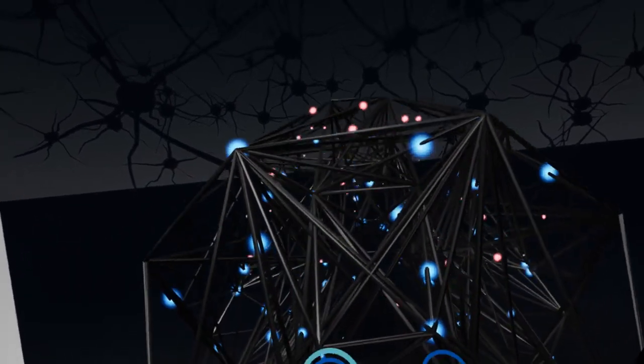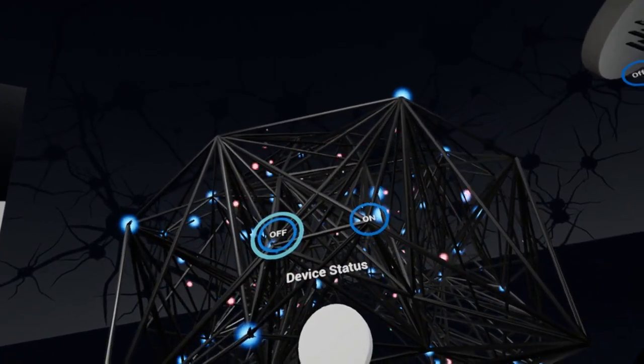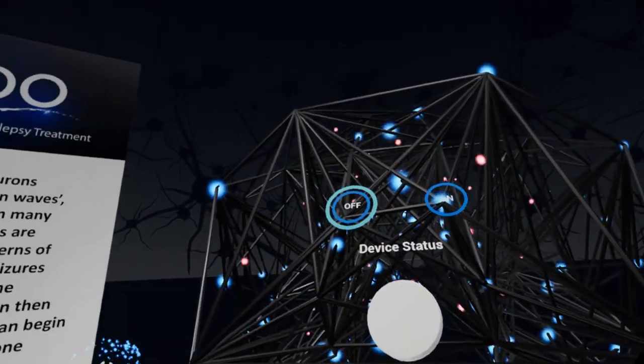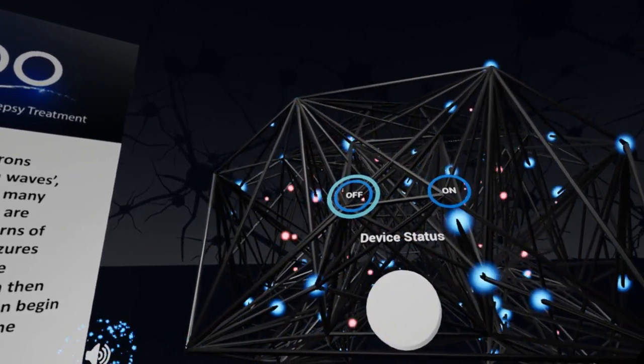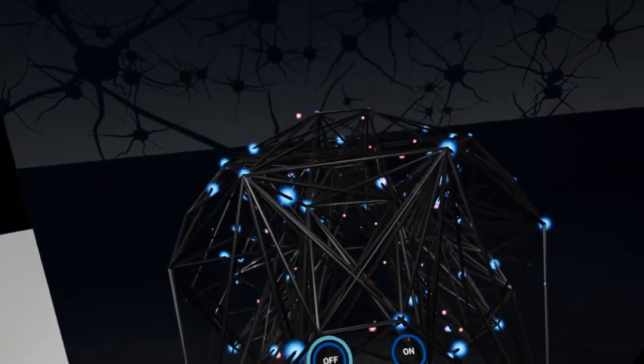In epilepsy, seizures occur when groups of neurons become overexcited. Seizures can begin in different areas of the brain or from one particular area, focus. The Candu device will be implanted into the area of the brain responsible for seizures.